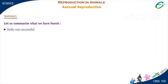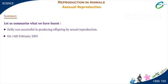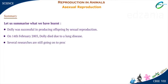Dolly was successful in producing offspring by sexual reproduction. On 14th February 2003, Dolly died due to a lung disease. Several researchers are still working to produce cloned animals; however, the cloned animals born are observed to have certain abnormalities.